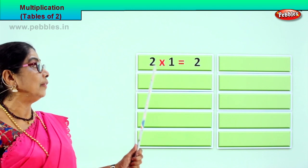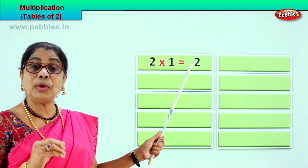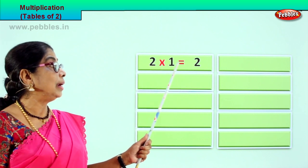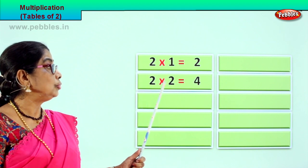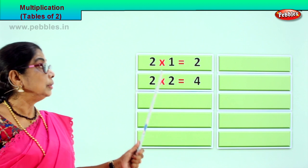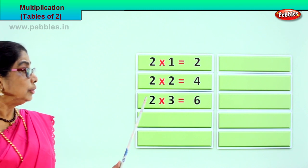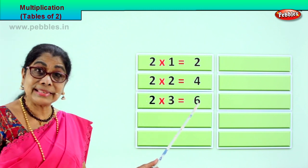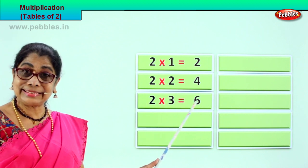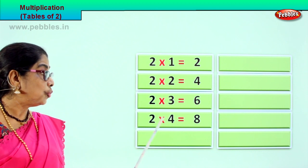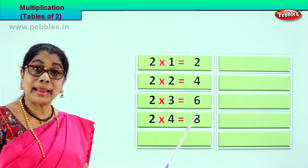The first one — look what we have here. Two ones are two. Look and say. Look and repeat many times. Two ones are two. Next: two twos are four. Two twos are four. Next: two threes are six. Repeat after me: two threes are six. Next: two fours are eight. Two fours are eight.